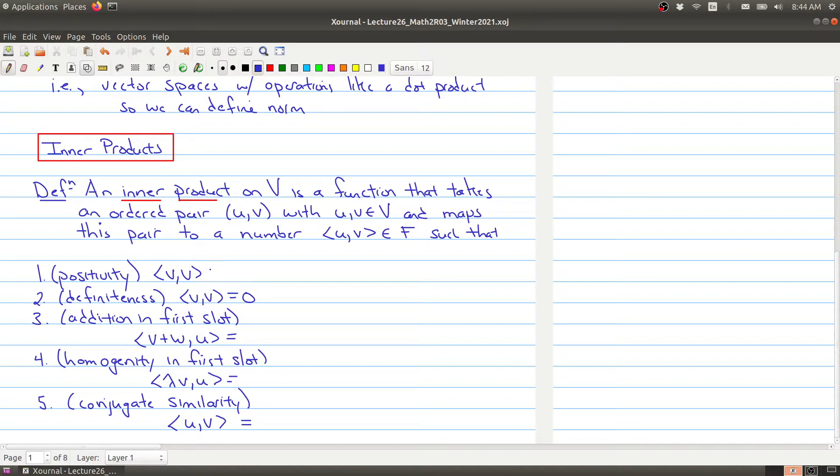The first property is positivity, and what that means is that you get a number that's greater than or equal to zero. So this number is a real number - even though it's mapped to a field, if it's a complex number, you still get a real number, and positive. So that's the first property that we have.